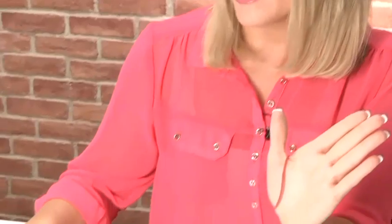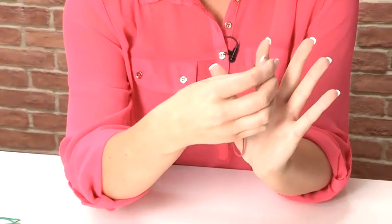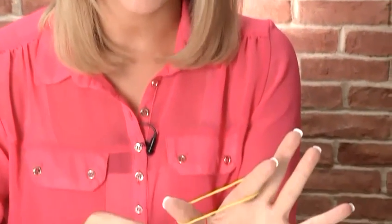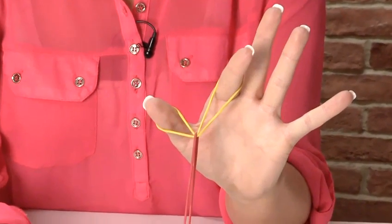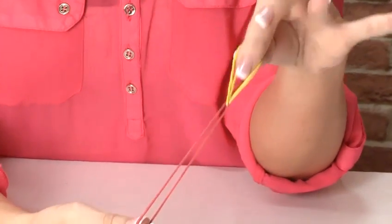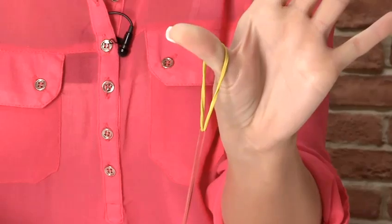Then take a different color rubber band and place it over your thumb and index finger like that. Take the red rubber band over your thumb like this and pinch your index finger and thumb together. Then make the yellow rubber band go over your thumb.